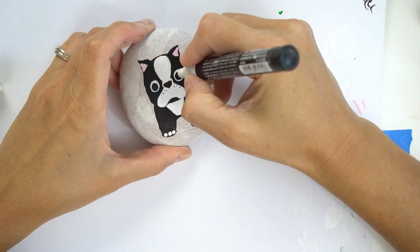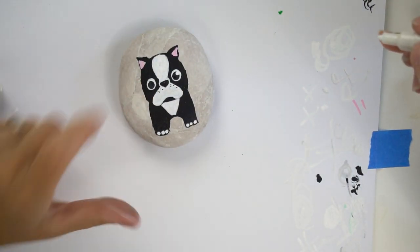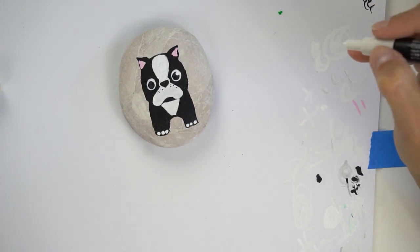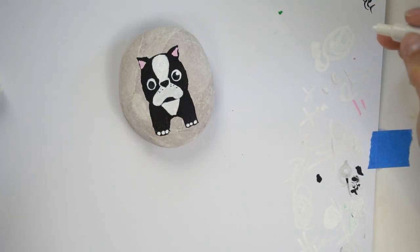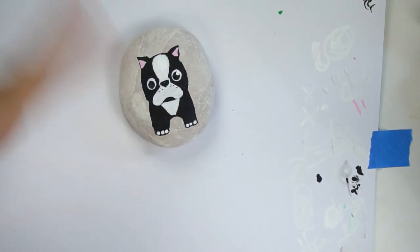This left one still has a smidge of black. You do not want to do it when the black is wet because you'll have a gray highlight. I'm just going to wait it out a little bit here. There we go.